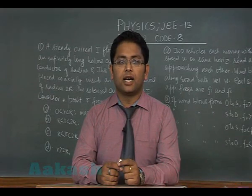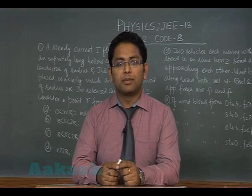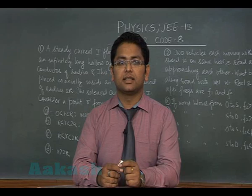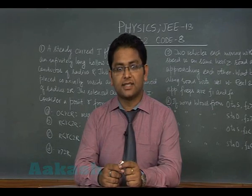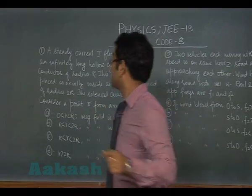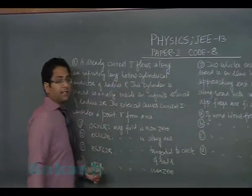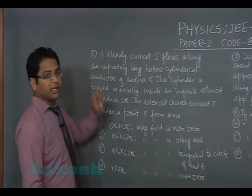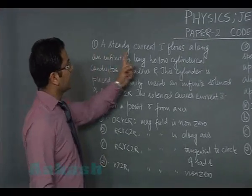Hello students, we are now going to discuss Paper 2 of JEE Advanced 2013 physics. Let's start the solutions. I'm discussing code 8, and the first question is a multiple option one. A steady current I flows along an infinitely long hollow cylindrical conductor of radius r.